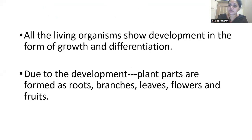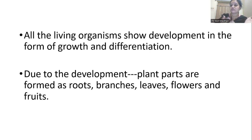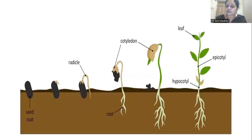Growth in the plant occurs by the formation of plant parts — the stem is elongated, the root is elongated, root hairs are formed, lateral roots are formed, and in the stem: branches, leaves, buds, flowers, and fruit formation. All this is what we consider as growth in the plant body. Once growth starts in the plant body, it is seen from the seed.